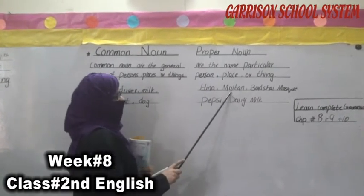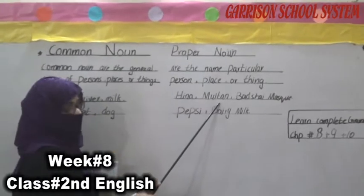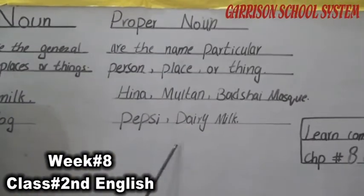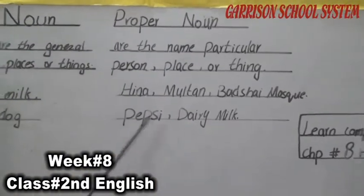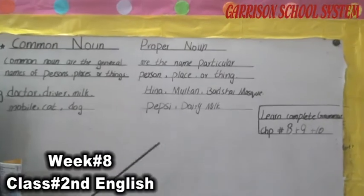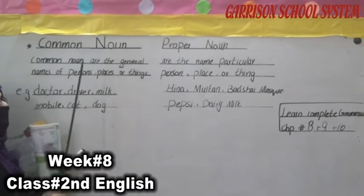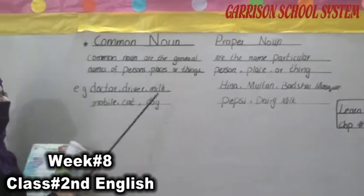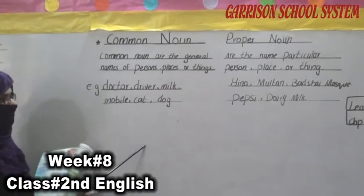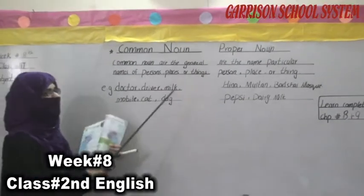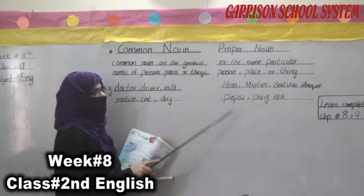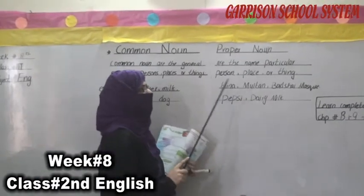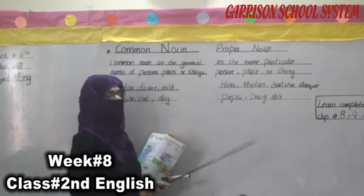Next examples of proper nouns are Musgaan, Barshali Moss, Pepsi, and Dairyman. These are examples of proper nouns. In common noun, common nouns are the general names of persons, places, or things, and the proper nouns are the names of a particular person, place, or thing.